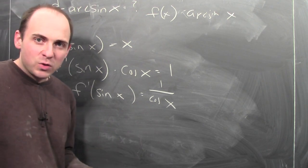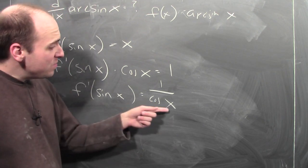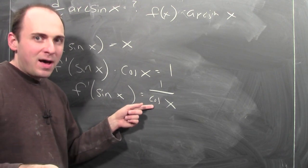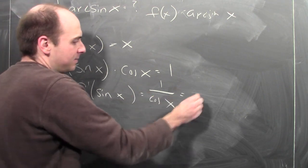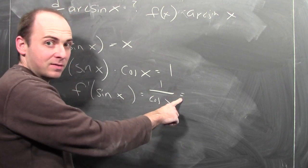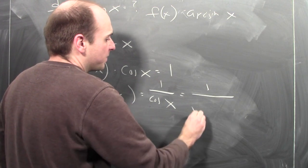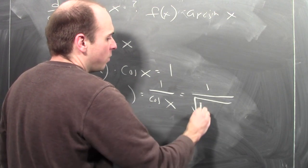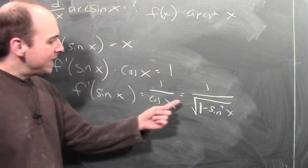Here's a trick: sine squared plus cosine squared is 1. So if I know that cosine is positive, I can rewrite 1 over cosine x as 1 over the square root of 1 minus sine squared x.